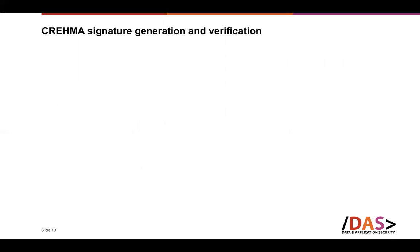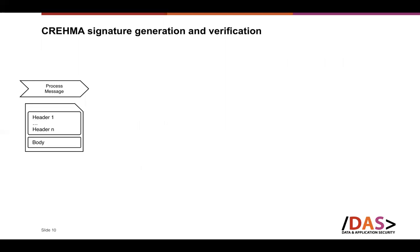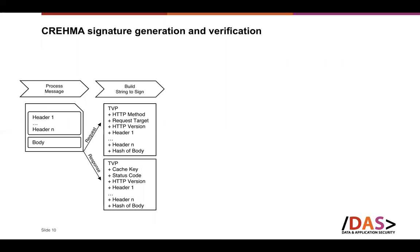CREMA's signature process is very similar to known signature schemes, with some slight changes. When a message needs to be signed, we have two templates: one for the request and one for the response. The key modification in the response signature process — compared to current schemes — is that it includes the cache key in the signature. The cache key consists of the request method and the URL, and both components must be integrated into the signature process of the response to prevent swapping attacks.